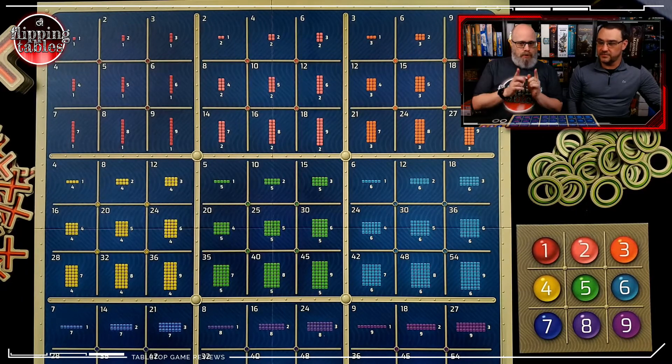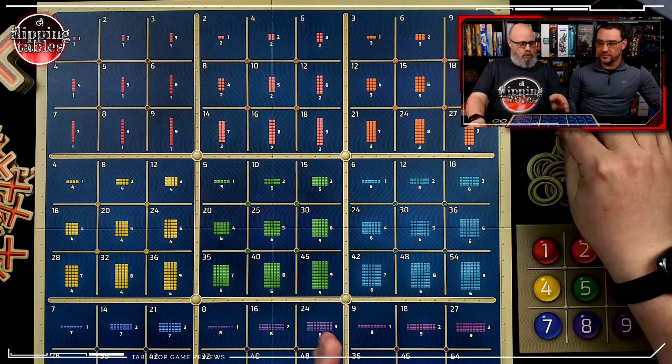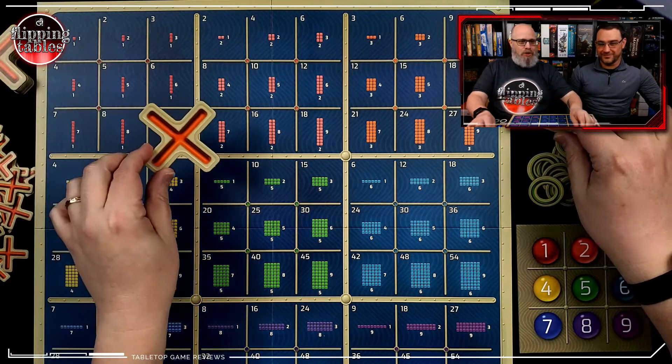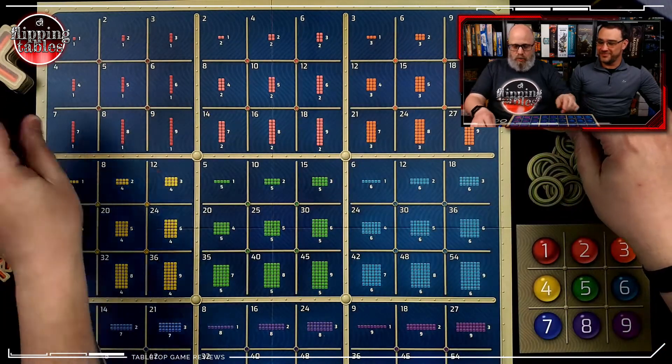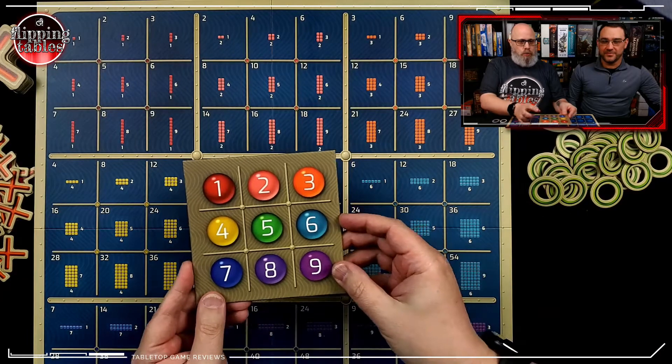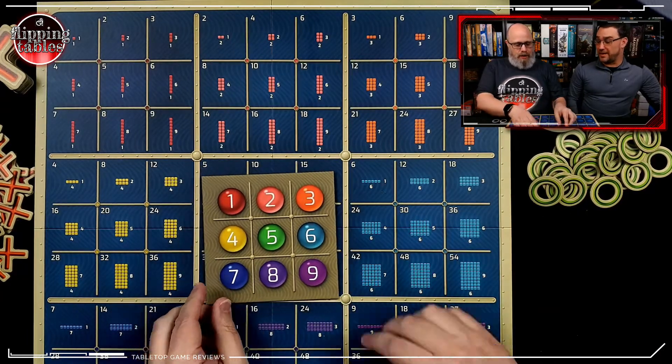The twist is you must only place your X's or O's on squares based on the factor board. This is where the fun of the game comes in, and the math.